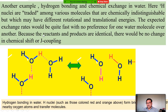In the case of hydrogen bonding in water, there are two different types of hydrogen bonding. One is called intermolecular hydrogen bonding and another is called intramolecular hydrogen bonding. Intra means within the same molecule, and inter means between different molecules.